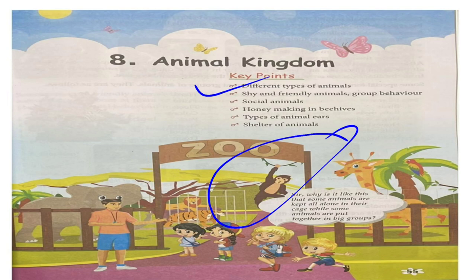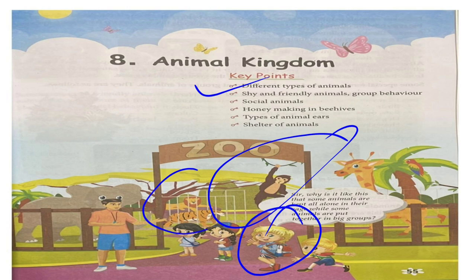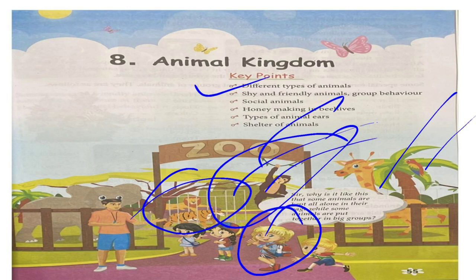Look at this monkey. A boy is very curious and wants to know: why is it that some animals are kept alone in a cage while some animals are put together in big groups? So why is this? Why is there this difference?